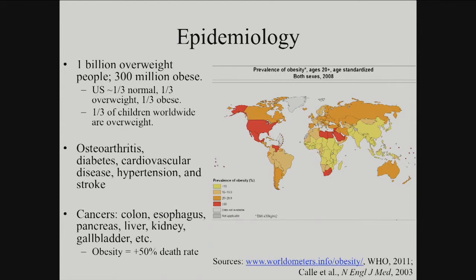The United States is one of the fattest countries in the world. According to that video we're number one, but we're actually number two nowadays — Mexico is number one. In the United States, a third of the population is overweight, a third is obese, and a third is normal, generally speaking.